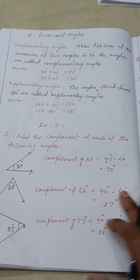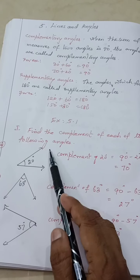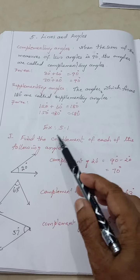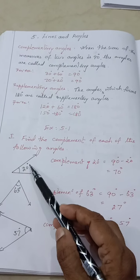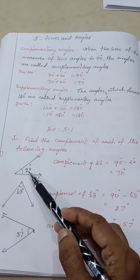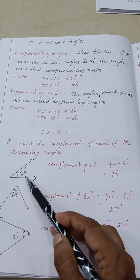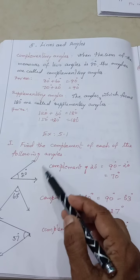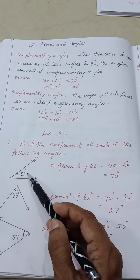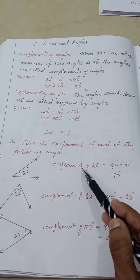Now let us see Exercise 5.1, Roman numeral one: find the complement of each of the following angles. The first angle given is 20 degrees. The complement of 20 degrees is 90 minus 20, which equals 70 degrees. So the complement of 20 degrees is 70 degrees.